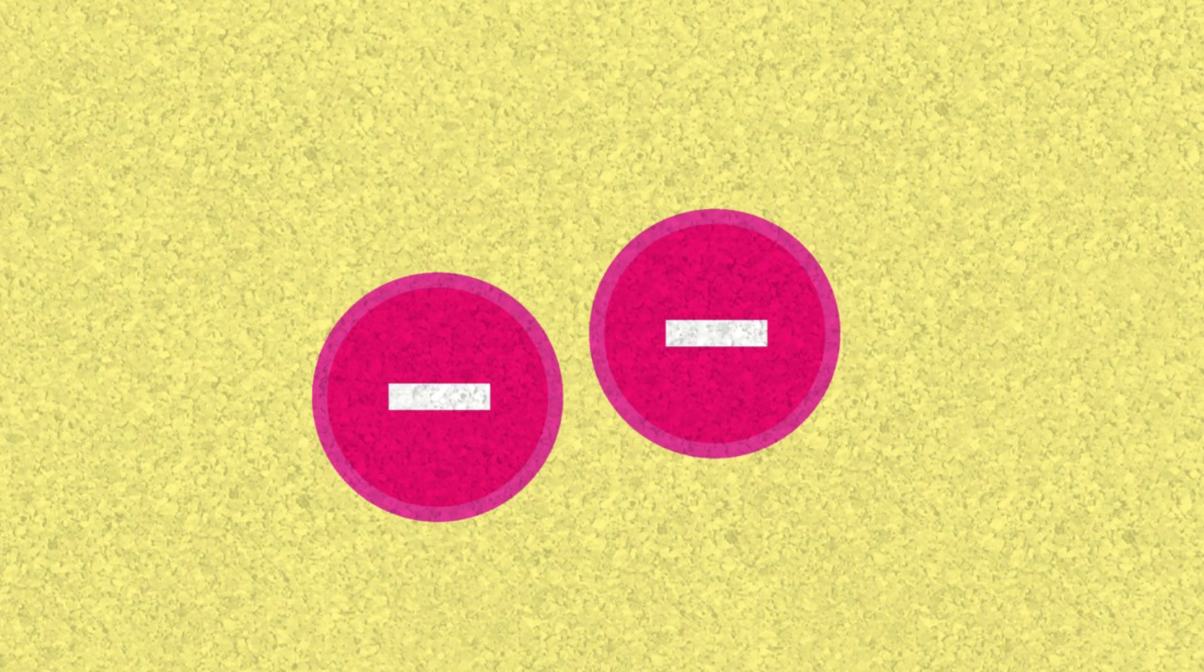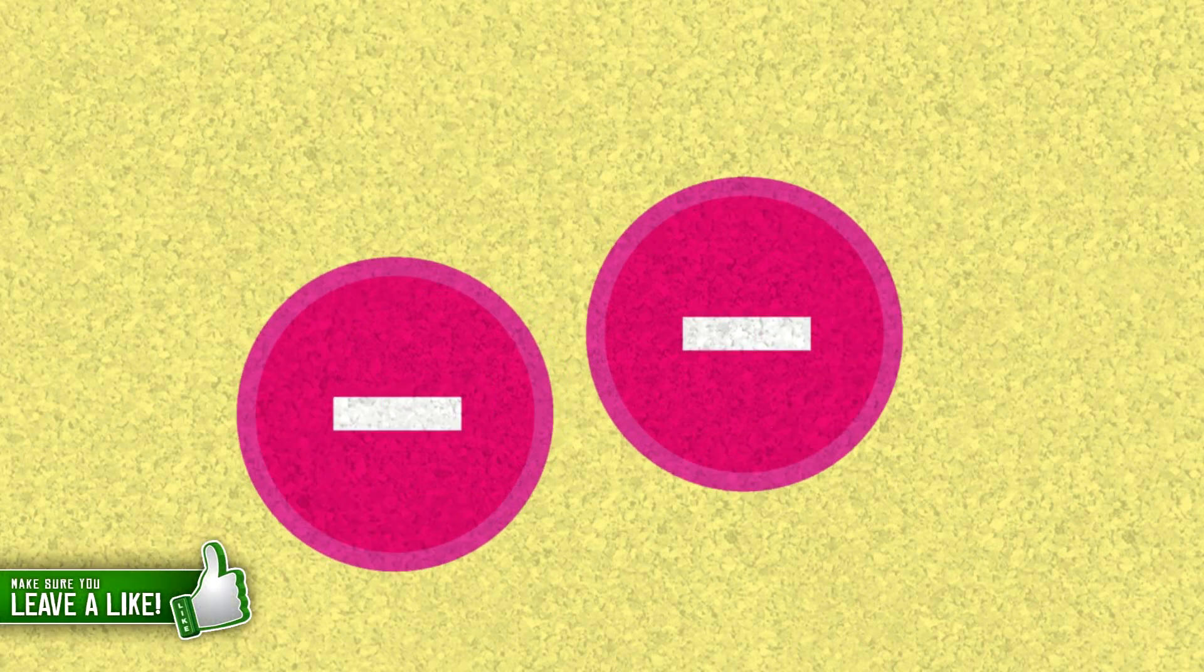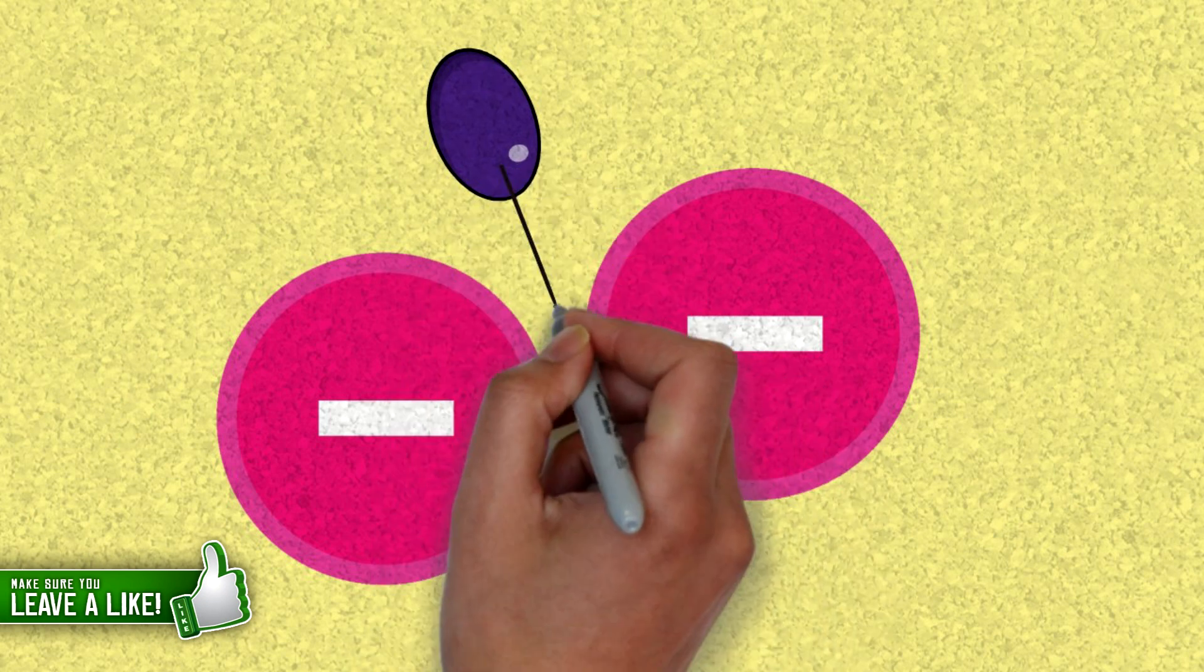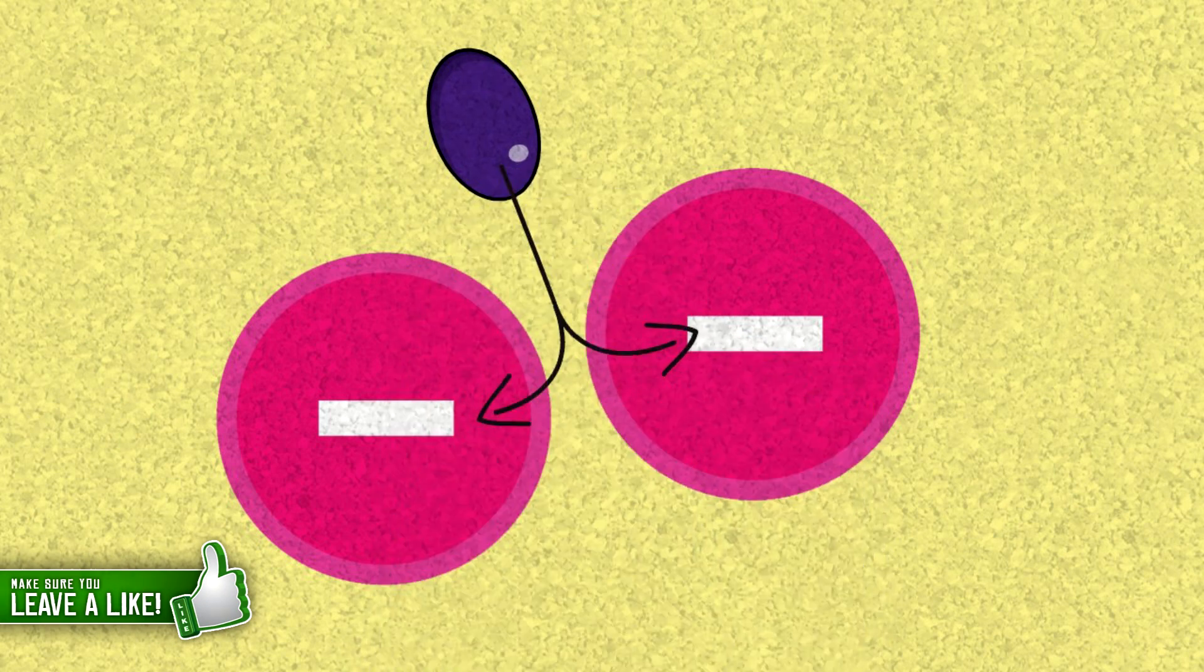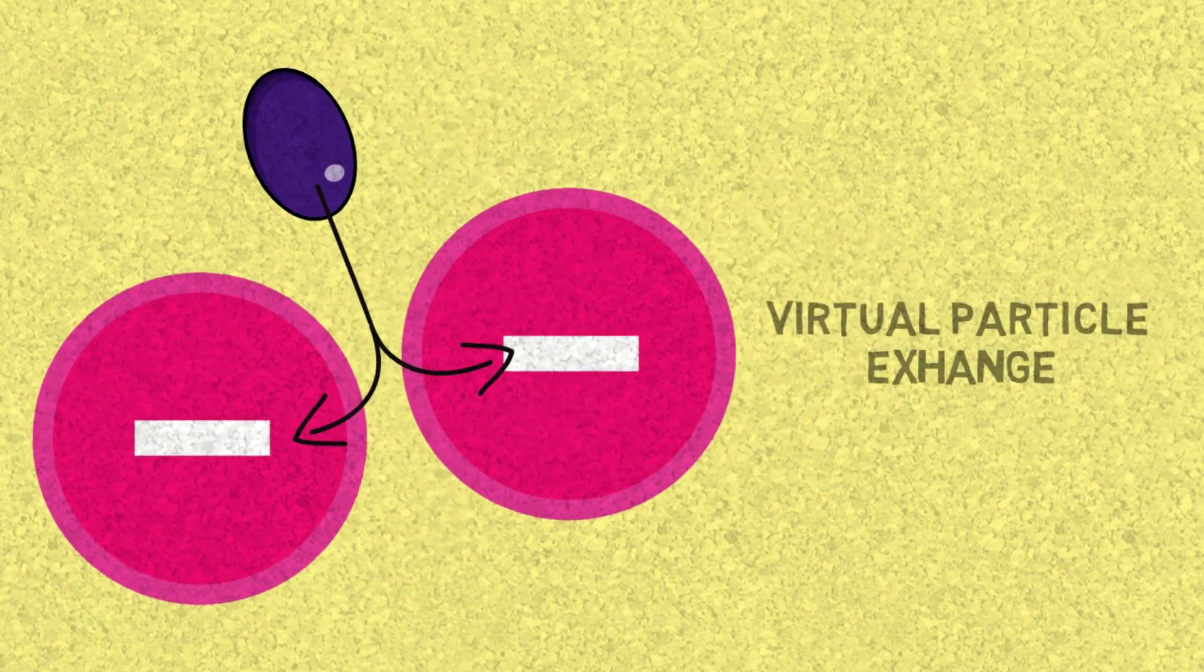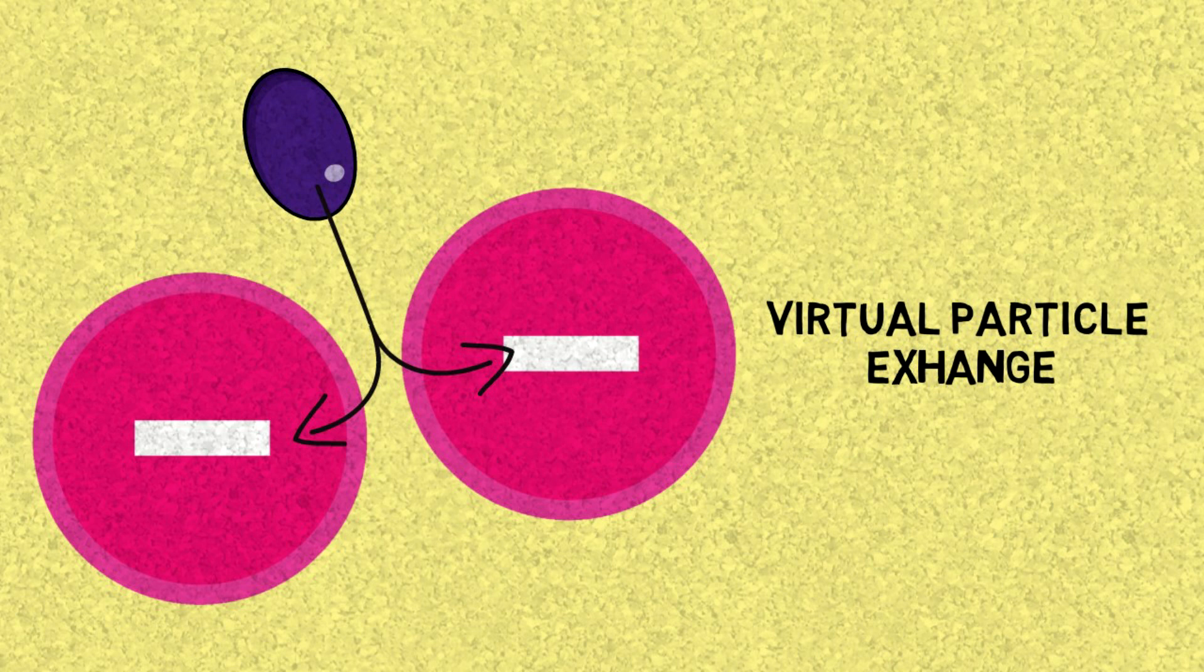Electrons affect the photon field like I mentioned. When two are close to each other, an energy spike happens in the photon field. A photon appears in that point, and that photon communicates to the electrons a force that makes them move away from each other. This is called a virtual particle exchange. The two electrons exchange photons, which makes them move away from each other.